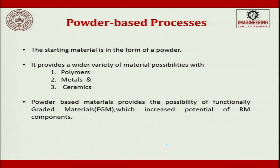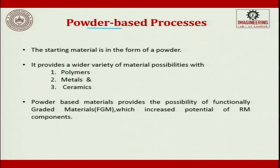We will now move to powder-based processes. In rapid manufacturing, you can make a mold out of polymer which is used for casting the output product — that is how the polymer process also falls under rapid manufacturing. In powder-based processes, the starting material is in the form of a powder. There are several types: polymer-based, metal-based, and ceramic-based. Powder-based materials provide the possibility of functionally graded material, which increases the potential of rapid manufacturing.